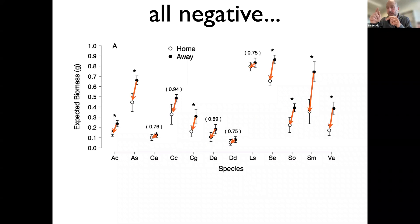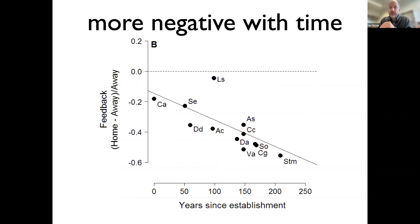Then he did something even more clever: he looked at the size of those effects — the length of the red arrows — and examined all those different species and how long they had been present in New Zealand. What he was able to show was that the longer a species was present in New Zealand, the more negative its feedback became. This suggests that enemy escape may have happened initially, but over time the soil has become less and less hospitable, probably through a buildup of pathogens.